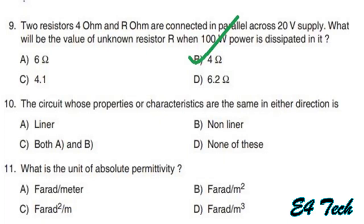The circuit whose properties or characteristics are the same in either direction is called a bilateral circuit — none of the listed options apply, so the answer is none of these. Next: what is the unit of absolute permittivity? Absolute permittivity unit is F per meter. Option A.